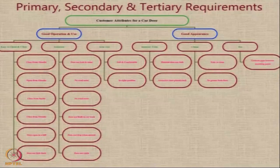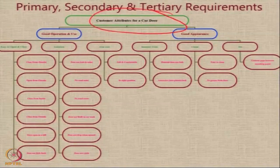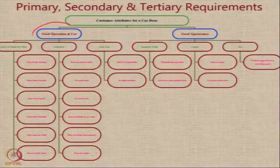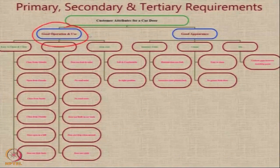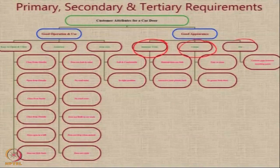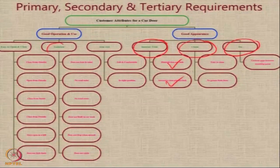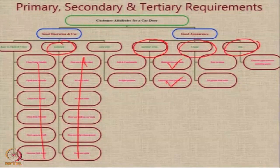Here is one chart. The green element at the top represents the primary requirement — the customer attributes for the car door. The secondary requirements in this case are 'good operation and use' and 'good appearance.' The primary requirement of the car door thus splits into two. When you look at good appearance, you have tertiary requirements: interior trim, cleanliness, and fit. Going further, you can have requirements like 'material does not fade' and 'should be attractive.' For isolation, there are many sub-requirements, and similarly for 'easy to open and close' — one can keep going further and come up with many high-level requirements.